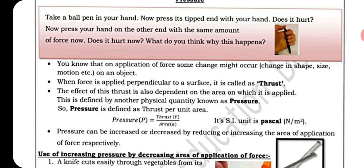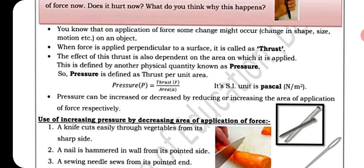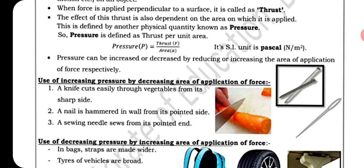Zyada area pe lagayenge to pressure kam hoga, aur kam area pe lagayenge to zyada hoga. Jis se koi nukili cheez hamare haath mein chubhti hai, woh zyada pressure lagayegi, isliye zyada hurt karayegi. Its SI unit is pascal, or newton per meter square.